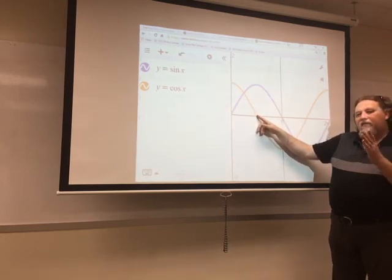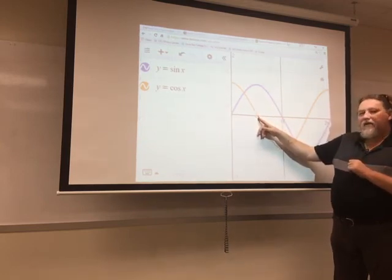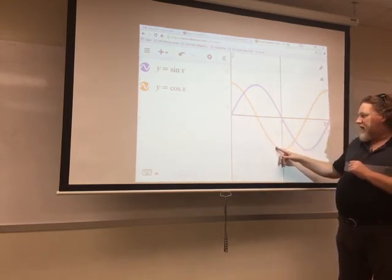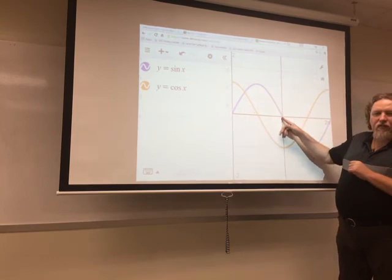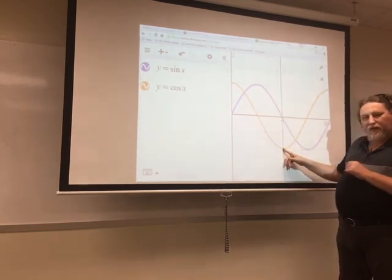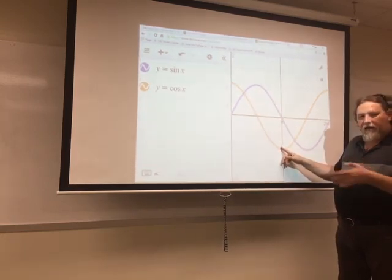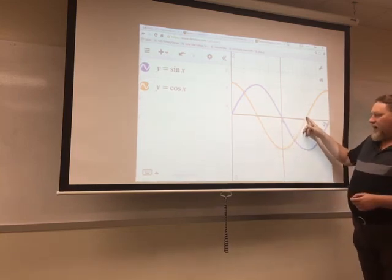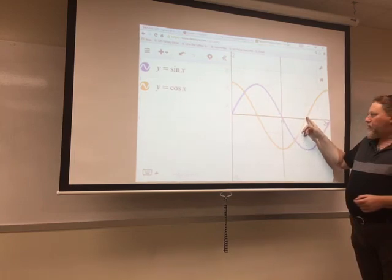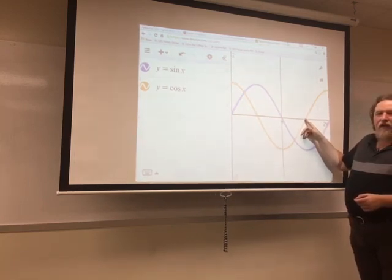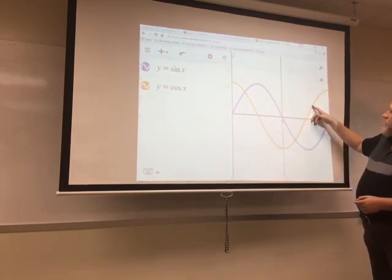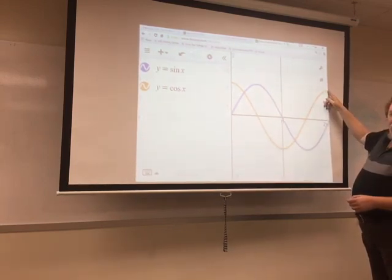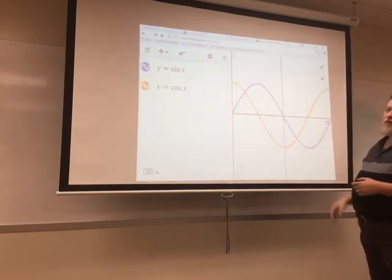Then, as x gets bigger and bigger, the angle gets bigger and bigger, cosine starts to be negative until you get to pi. And from the unit circle we know that the cosine of pi is negative 1. And then as your angle gets even bigger, now cosine starts to get bigger and bigger until we get to right here. This is 3 pi over 2, and cosine is 0 again. And then as we continue going through toward 2 pi, cosine gets bigger and bigger until it equals 1.